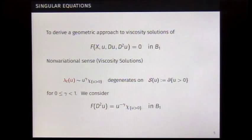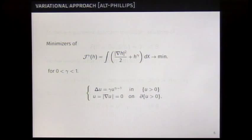We can make a relation. It's a non-variational approach, right? If you relate, we can relate to a variational approach. Alt-Phillips developed that similar case for a minimizer of that functional, for gamma between 0 and 2.